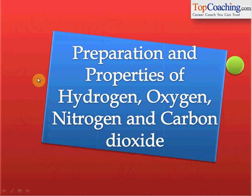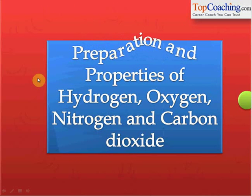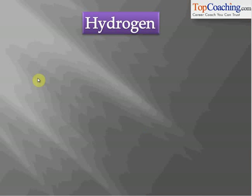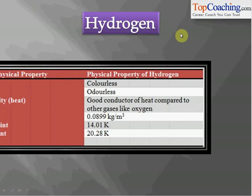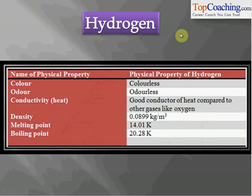Let's start off with hydrogen gas. Hydrogen gas was first discovered by Henry Cavendish in the year 1776. Here are some of its physical properties.